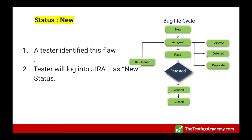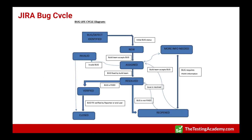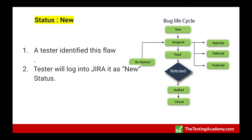If it's a valid bug, it goes to a 'Fixed' or 'Resolved' state. Then it is retested by the same tester. If it still doesn't work, it gets 'Reopened' and goes back through the assigned and fixed states. If the retest is successful and everything is verified, it goes to a 'Verified' state, then to production, and the tester closes it.